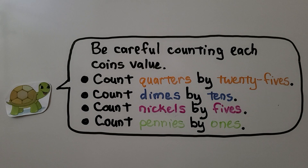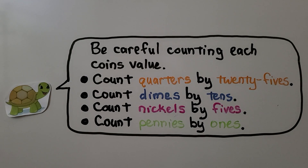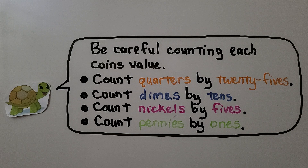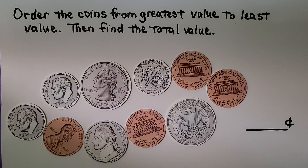Be careful counting each coin's value. We count quarters by counting 25s. We count dimes by tens. We count nickels by fives, and count pennies by ones. Here it's telling us to order the coins from greatest value to least value again, then find the total value.